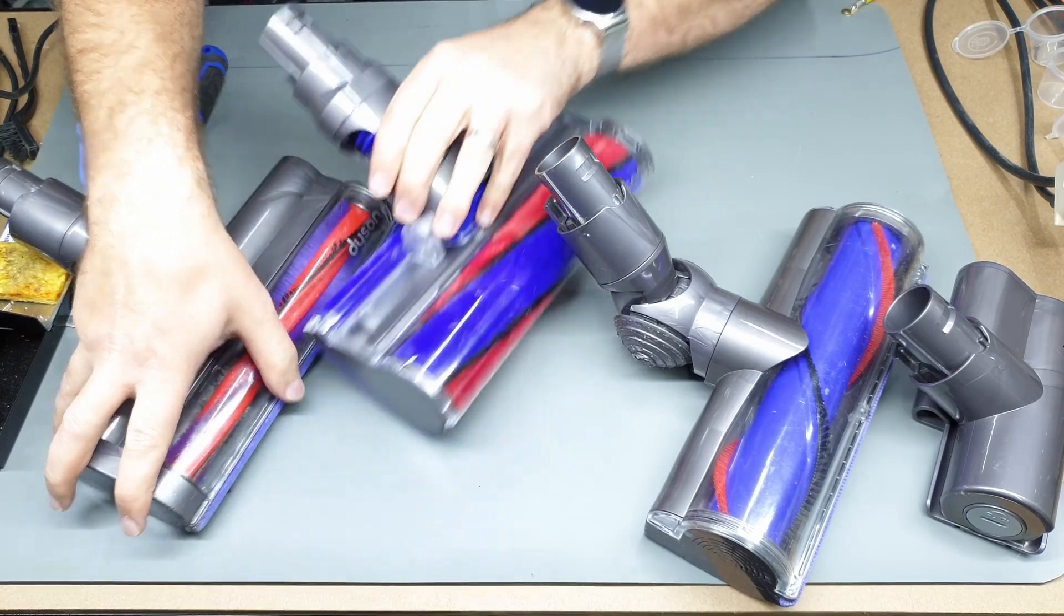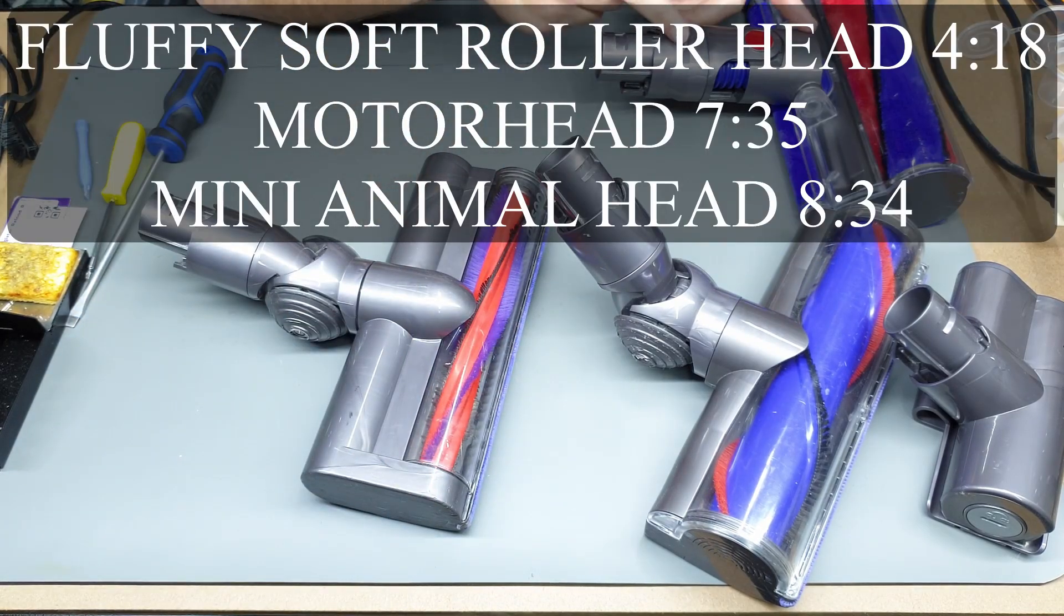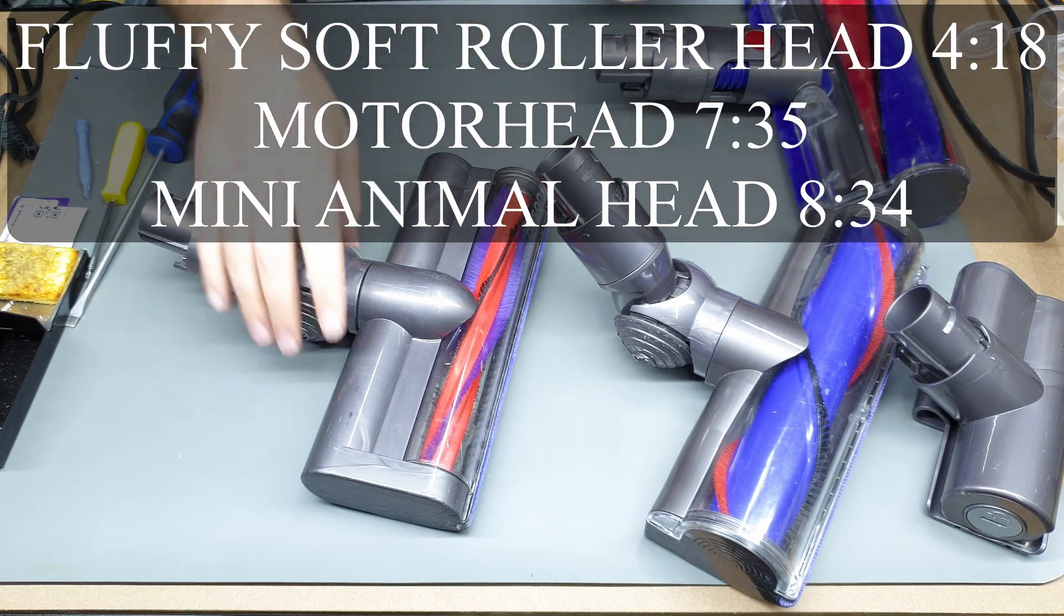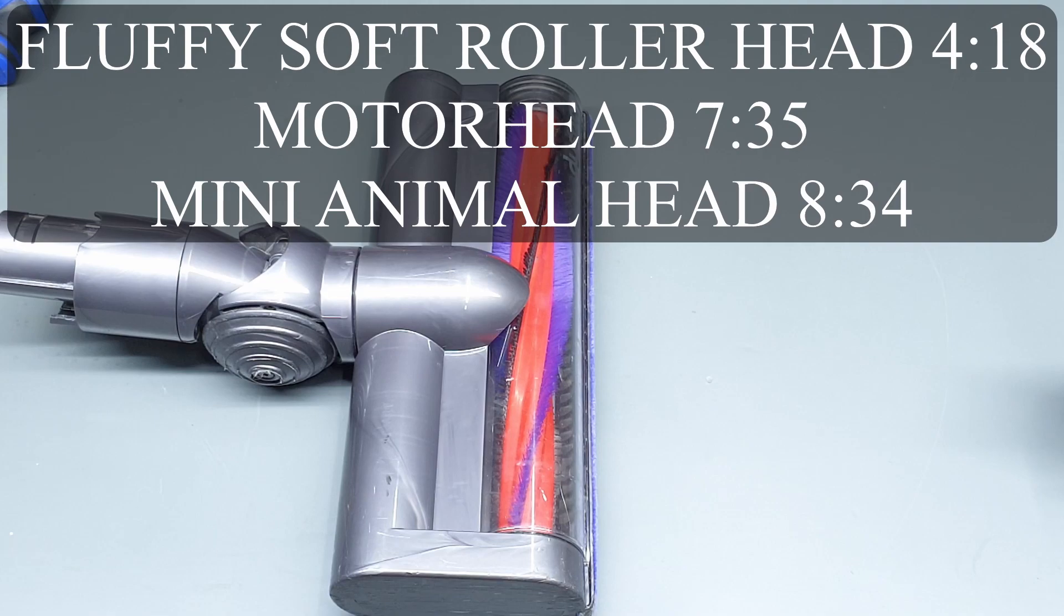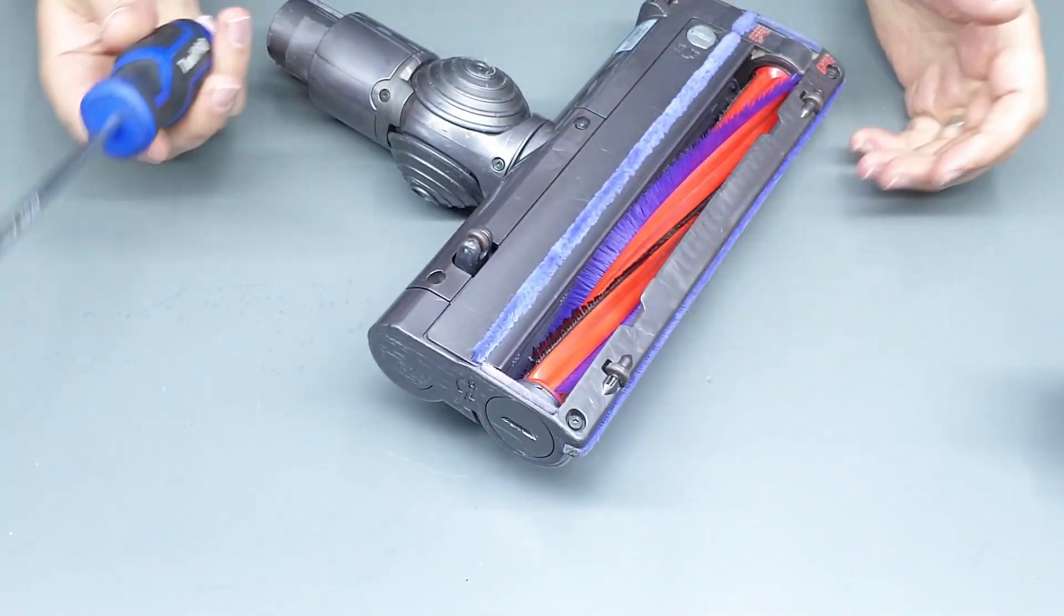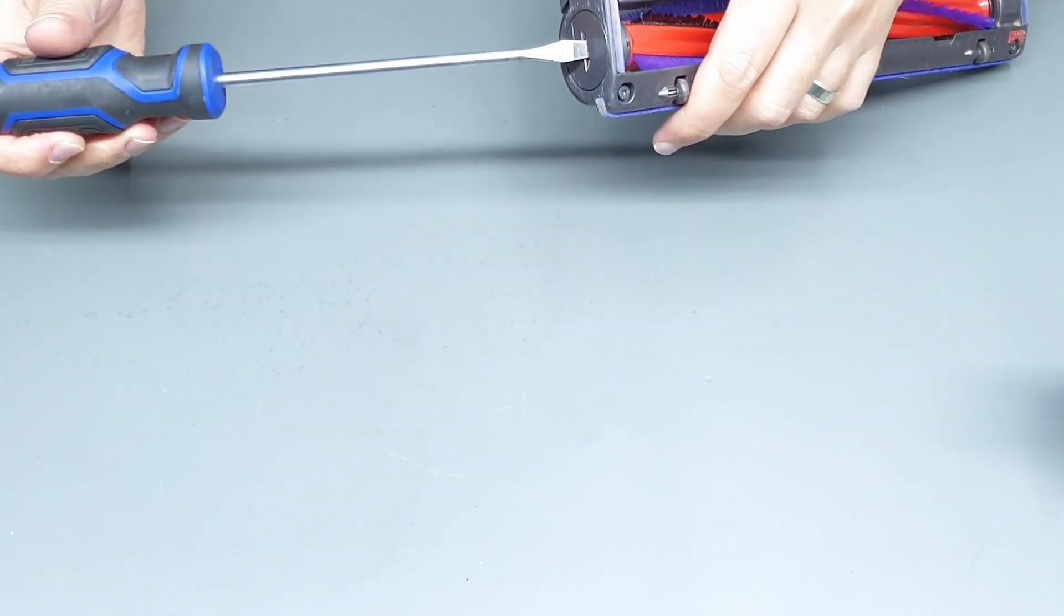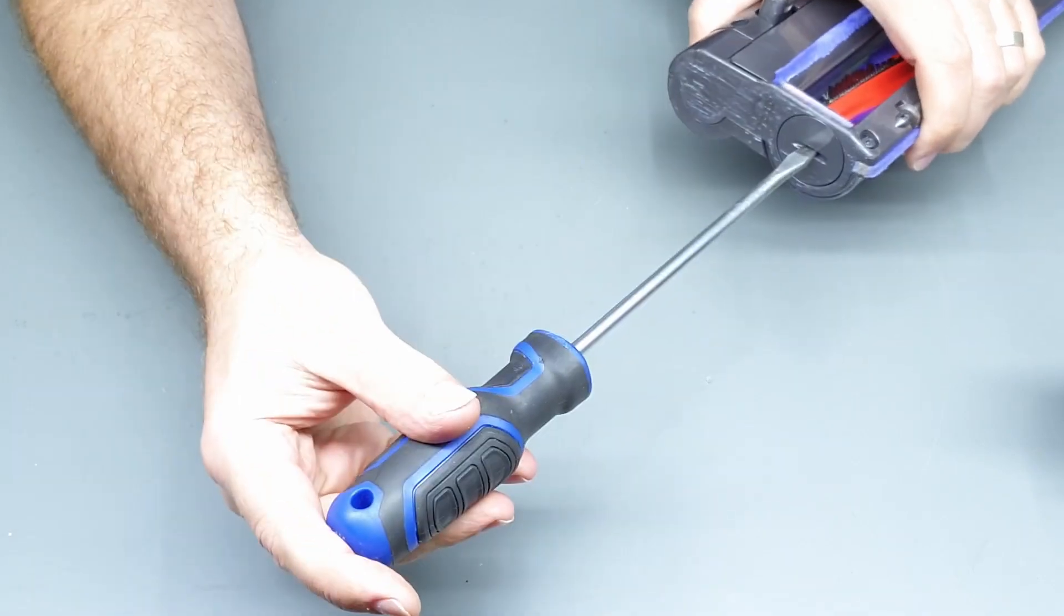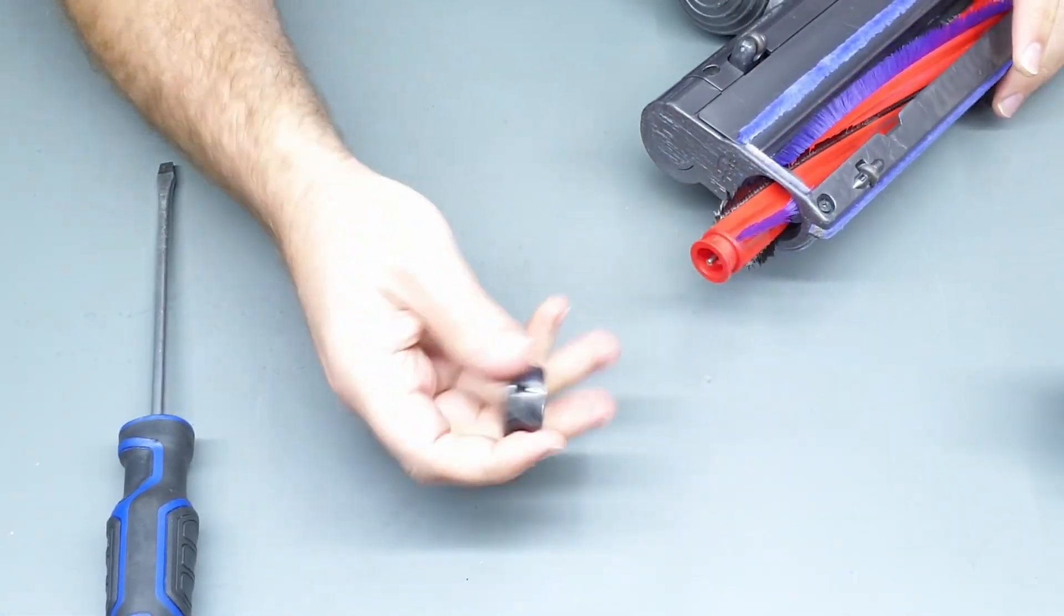Alright so I'll start off with this one but I will put some notes in the video if you want to jump ahead to where I pull apart the other ones, but we'll start with probably the most basic one. Tools you'll need, a large flathead screwdriver or even just a coin, just so we can twist this open and you can pull that straight out.